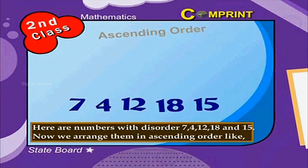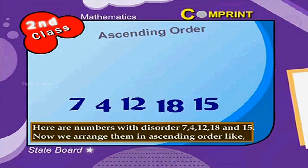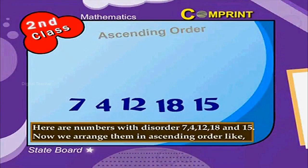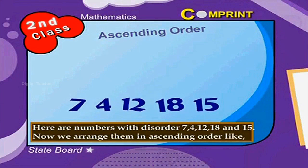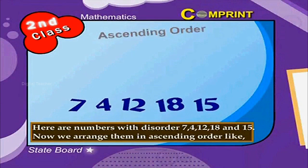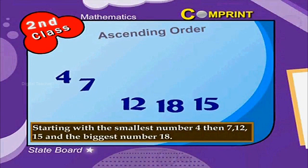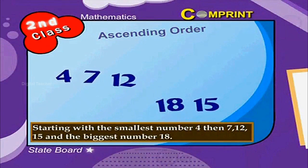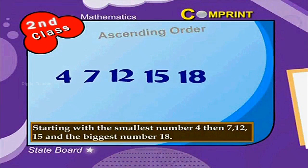here are numbers in disorder: 7, 4, 12, 18 and 15. Now we arrange them in ascending order, starting with the smallest number 4, then 7, 12, 15, and the biggest number 18.